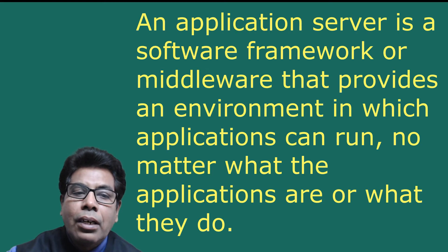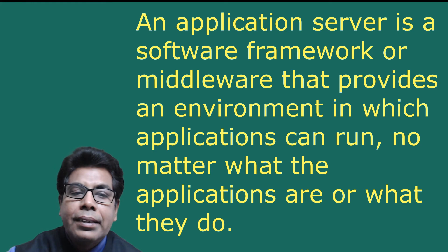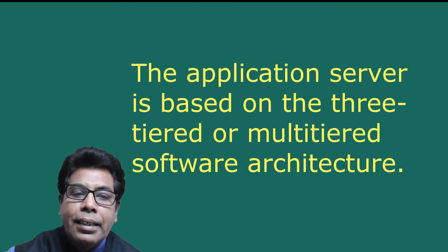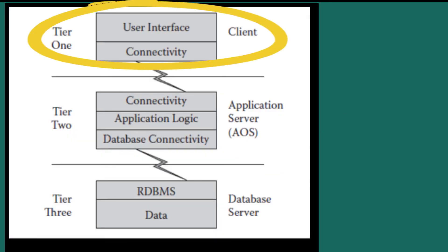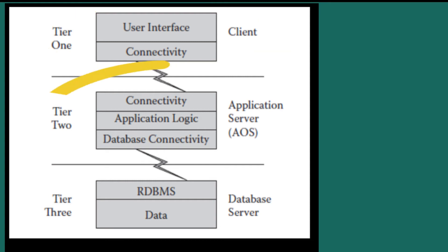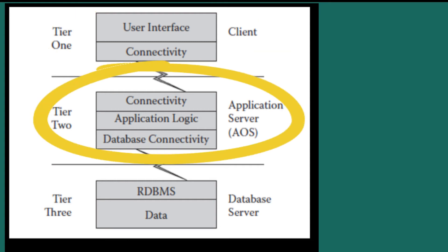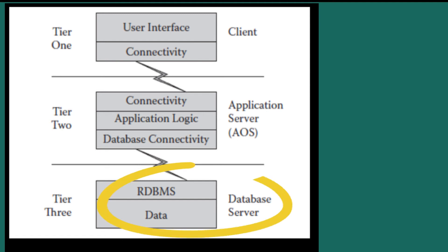The application server became the foundation that helped build widely spreading web-based applications. An application server is a software framework or middleware that provides an environment in which applications can run, no matter what the applications are or what they do. It acts as a set of components accessible to the software developer through an API defined in the middleware itself. The application server is based on three-tier or multi-tiered software architecture. Tier 1 has the client with user interface; Tier 2 has the application server with application logic and database connectivity; and Tier 3 has the database server with RDBMS and data.